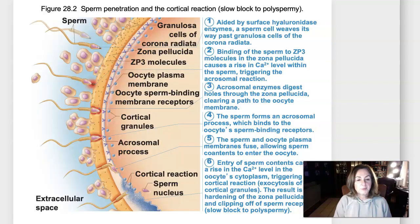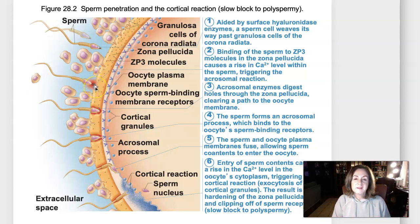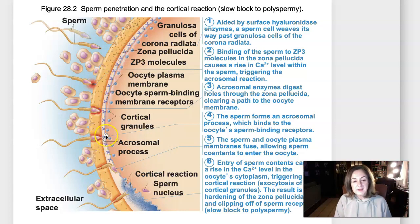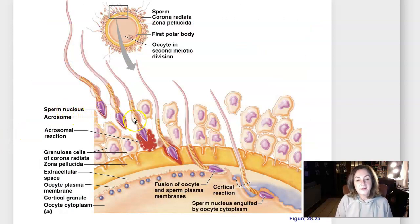Once a sperm cell makes contact with the secondary oocyte, the acrosomal reaction is depicted here in red. The acrosome is right on the head of the sperm cell — it contacts the oocyte, releases the acrosomal enzymes, and that degrades the corona radiata cells and the zona pellucida, the yellow layer. The acrosomal reaction is necessary for the sperm cell to make contact with the membrane of the secondary oocyte. Sperm cell contacts the ovulated secondary oocyte, the acrosomal reaction degrades away the corona radiata and zona pellucida, allowing the sperm cell to contact the membrane.